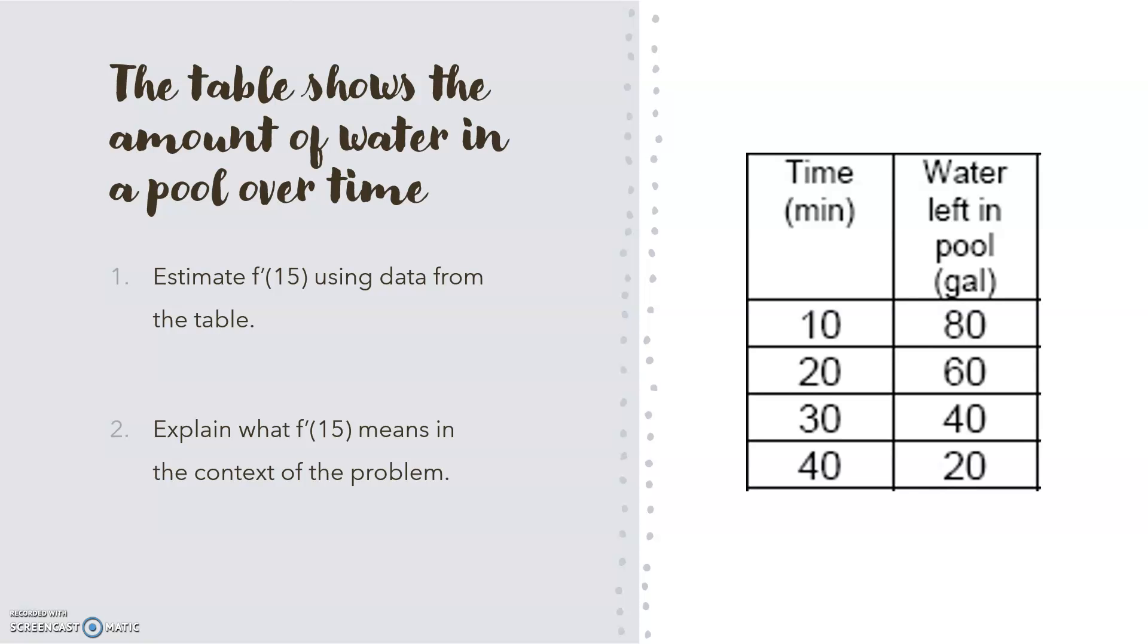Here's a table. It shows the amount of water in a pool over time. Our problem is estimate f prime of 15 using data from the table. These are the two values I would use because they're close to 15. So f prime of 15 would be approximately equal to 60 minus 80 over 20 minus 10. And so it would be negative 20 over 10 or negative 2.